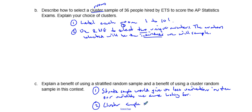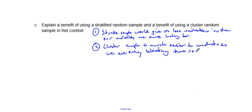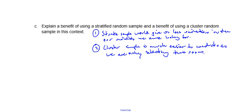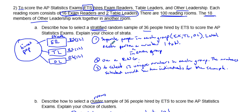A cluster sample, on the other hand, is much easier to conduct, because we are only selecting two rooms rather than individually identifying and sampling from every person. So less variation is the benefit of using strata, and ease of execution is the benefit of using a cluster sample. You have to decide which benefit matters most depending on what you're trying to figure out with your data. Hopefully this helps you work through similar problems.